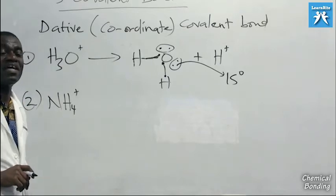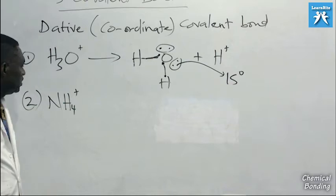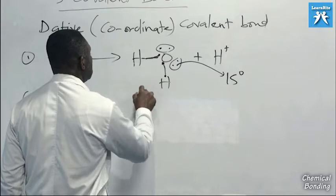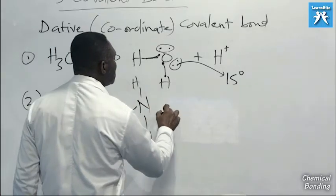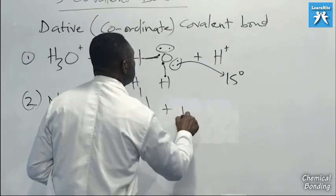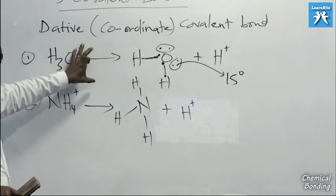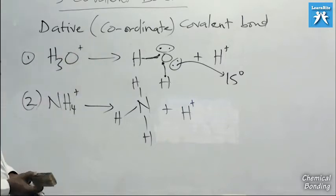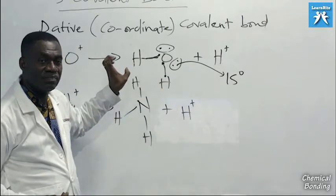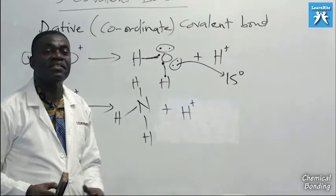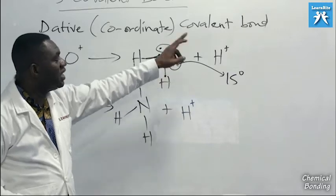Example two is the ammonium ion (NH4+). These examples will always appear in your exam, so take note. The ammonium ion, if broken down, is ammonia (NH3) plus a hydrogen ion (H+). When asked to describe the bonds in H3O+, there is a covalent bond between oxygen and the first two hydrogen atoms in water, and then the bond between water and the hydrogen ion is a dative covalent bond.